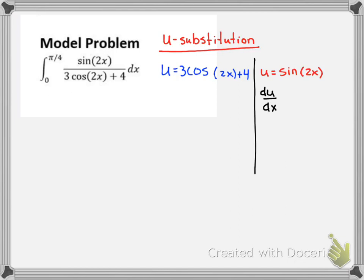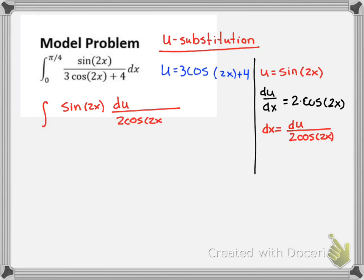So if it works, our u prime, or our du/dx would be equal to 2 times cosine of 2x. That would mean if I was to solve this for dx, it would equal du over 2 cosine of 2x. And if I was to rewrite this, I'm going to leave off my integration limits. I would have sine of 2x, and I would replace dx with du over 2 cosine of 2x. And in the denominator, I would have 3 cosine of 2x plus 4. And I would go ahead and replace this sine of 2x with u.